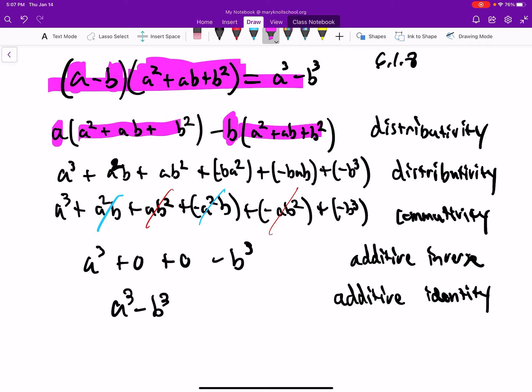And then we need to use the commutativity property so that we have identical versions. So right here, we have negative BAB, but we want this to be negative AB squared, what we get here, so that we can cancel it out with this positive AB squared.